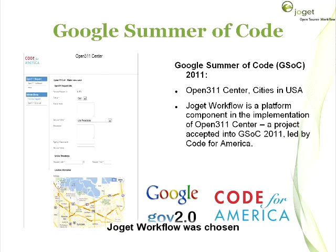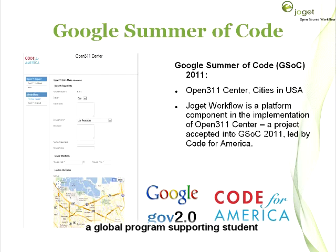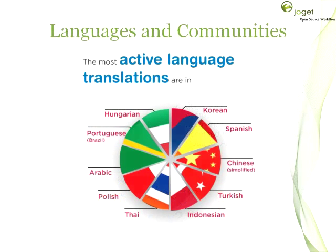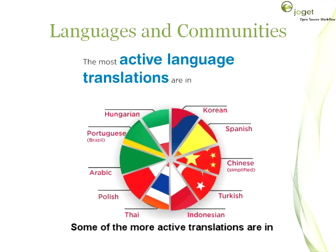Joget Workflow was chosen as a platform component in the implementation of the Open311 Center project at Code for America. This project was part of the Google Summer of Code 2011, a global program supporting student participation in open-source projects. In terms of global community participation, there are more than 10 language translations for various languages by the Joget Workflow community, with some of the more active translations in Chinese, Korean, Malay and Portuguese.